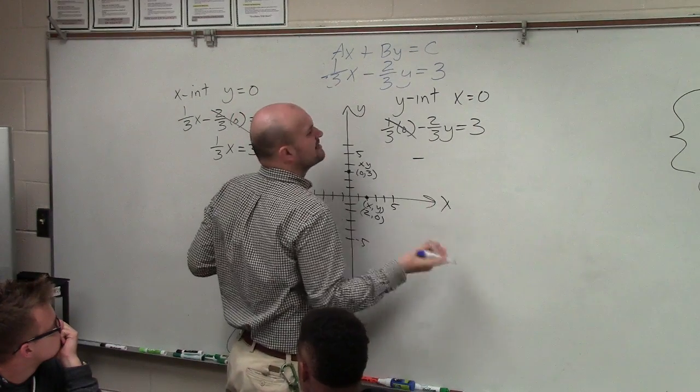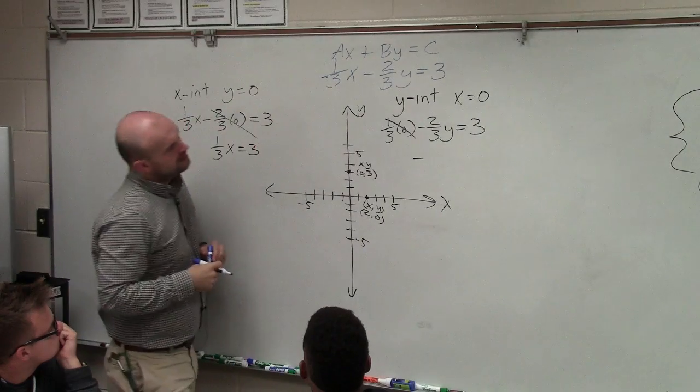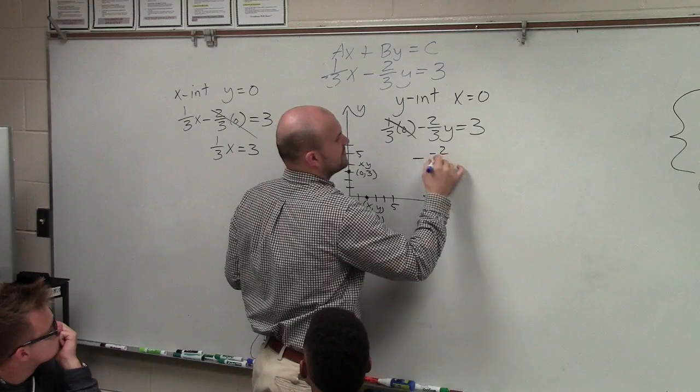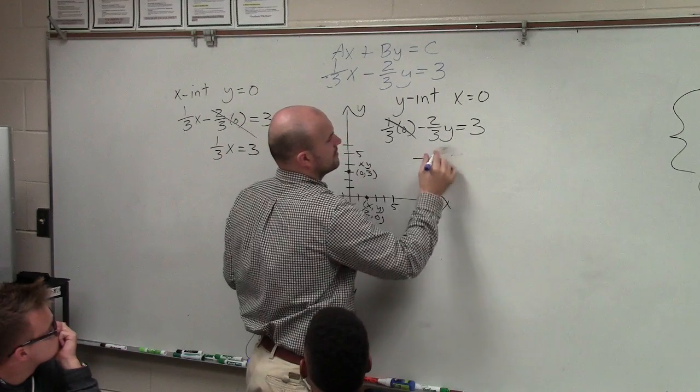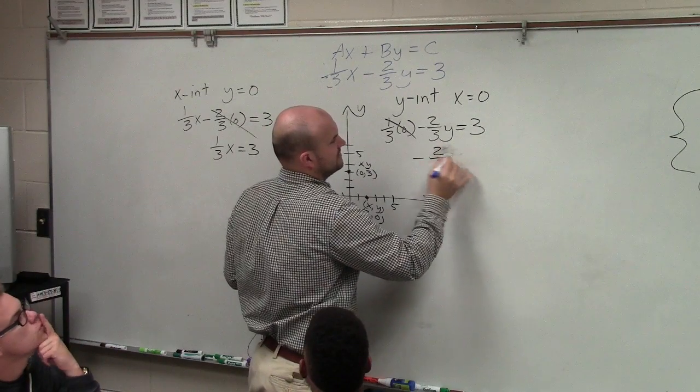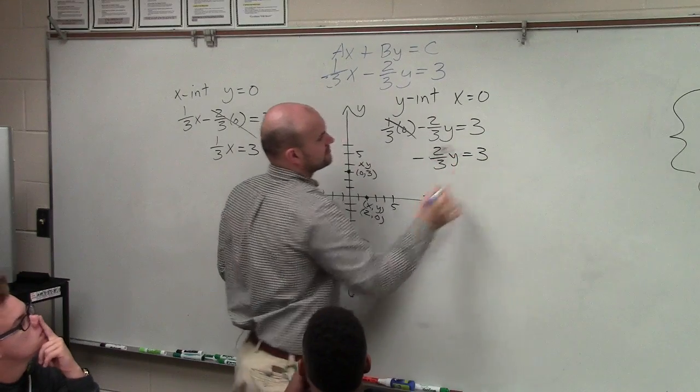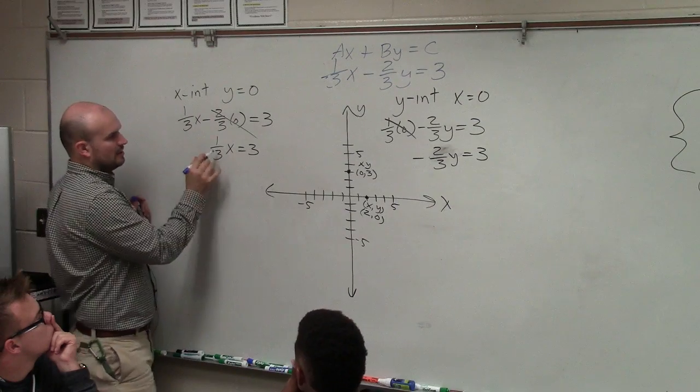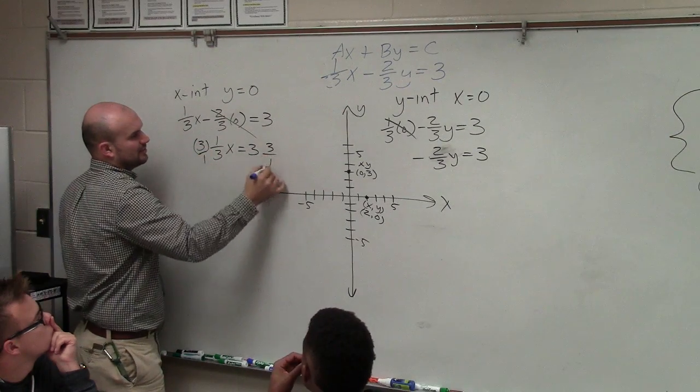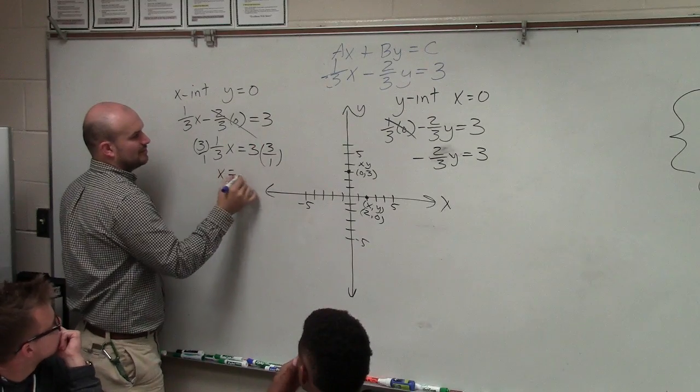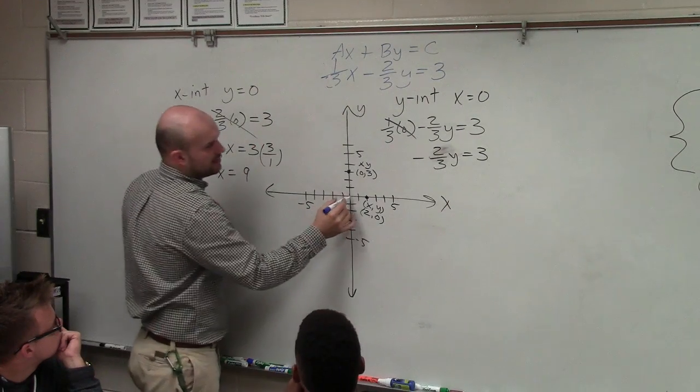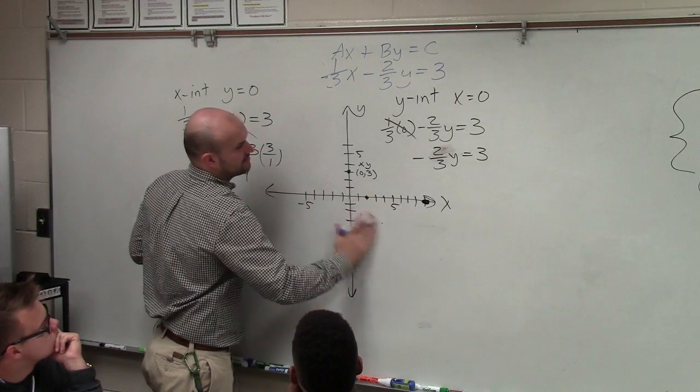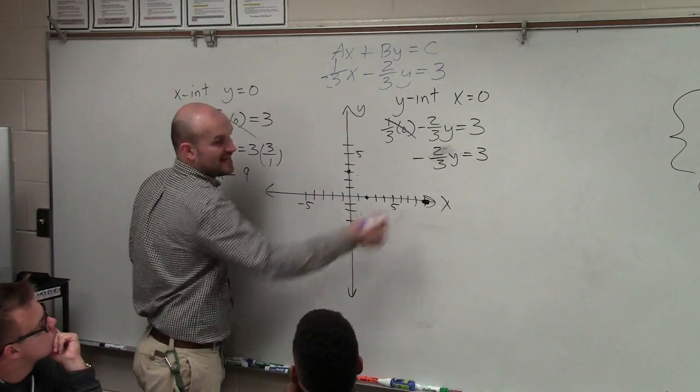And here I'm left with negative - ah, I did my math wrong when I was doing this. That's going to be negative two-thirds y equals 3. So to solve here, all you do is multiply by 3 over 1, the reciprocal, right? So I get x equals 9. So I go over to 9: 1, 2, 3, 4, 5, 6, 7, 8, 9. And I make a nice big dot. That's the x-intercept.